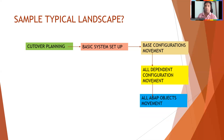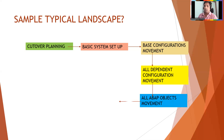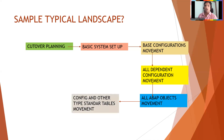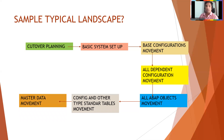Then you move all ABAP objects. If you wrote any custom programs — for example, storage location determination automatically, delivery creation based on certain dates, background jobs, SC38 programs, BDCs — everything will be moved. Config and other standard table movements: configurable tables, SM30 standard maintenance tables, TVARVC variables, any custom process forms — all will be done. Then you do master data movement.